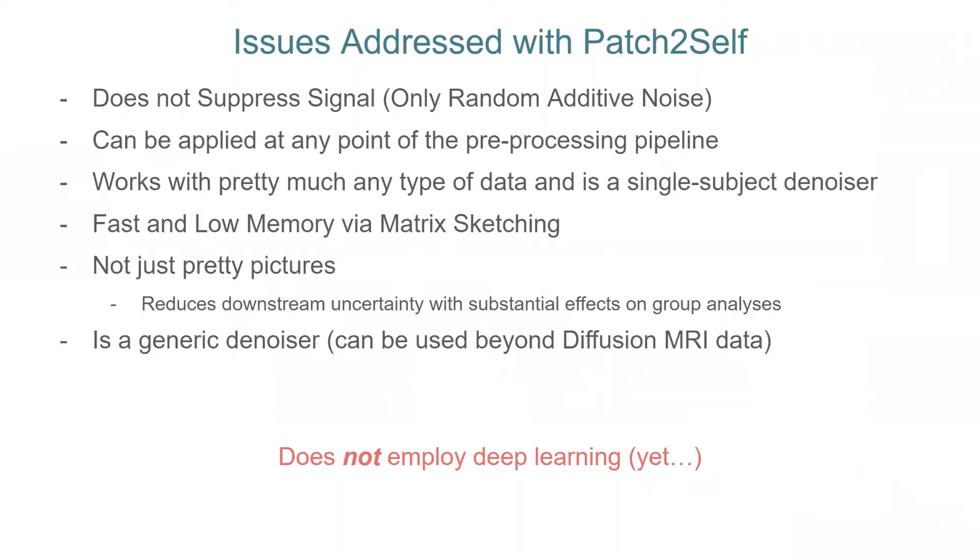So before getting into what the method is and how it works, here are some issues that we addressed with Patch2Self. First and foremost, we take care that Patch2Self does not suppress signal, it only manages to suppress random additive noise. It can be applied at any point of the preprocessing pipeline, in the sense that we do not make a hard requirement that it has to be the first step that has to be applied on raw data.